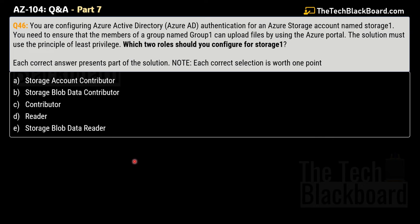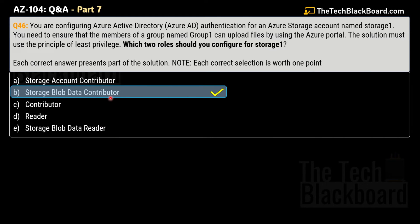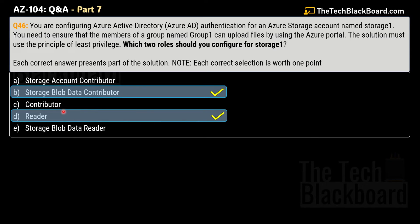Question 46: You are configuring Azure Active Directory authentication for an Azure storage account named storage1. You need to ensure that members of a group named group1 can upload files using the Azure portal, and the solution must use the principle of least privilege. Select all correct answers — each correct selection is worth one point. The options are: Storage Account Contributor, Storage Blob Data Contributor, Contributor, Reader, and Storage Blob Data Reader. The correct options are Option B — Storage Blob Data Contributor — and Option D — Reader.